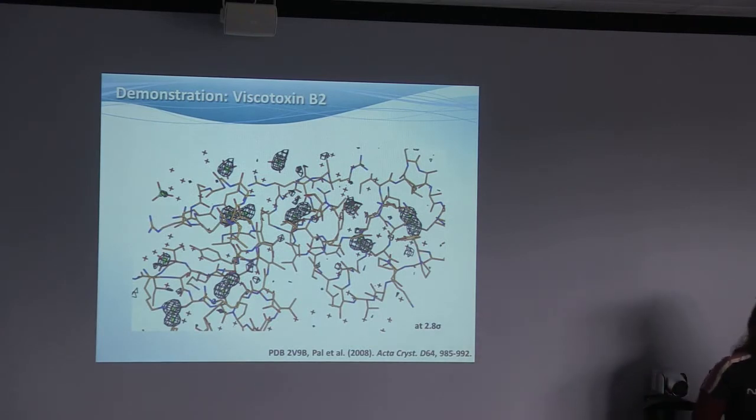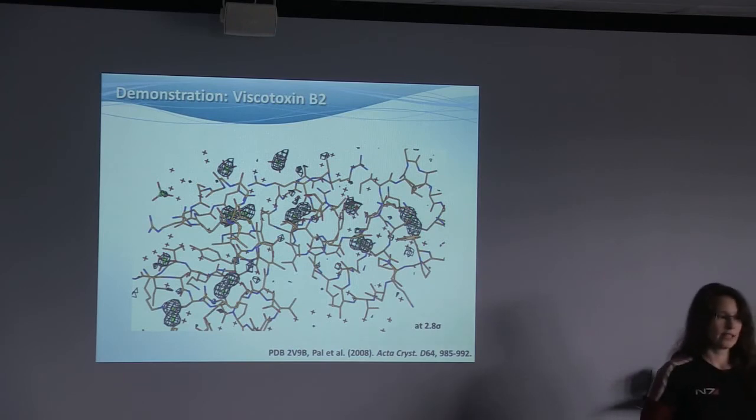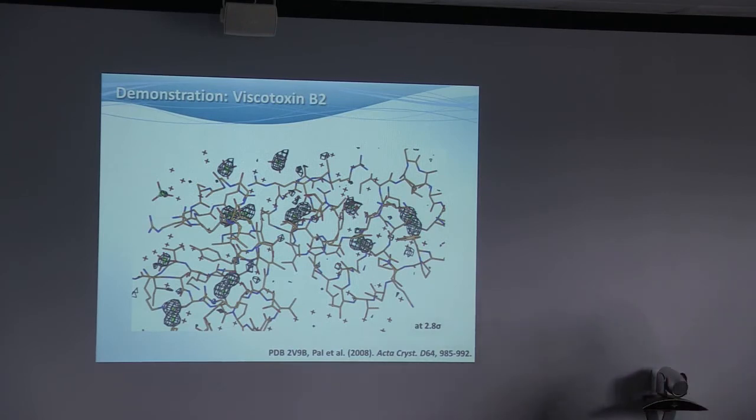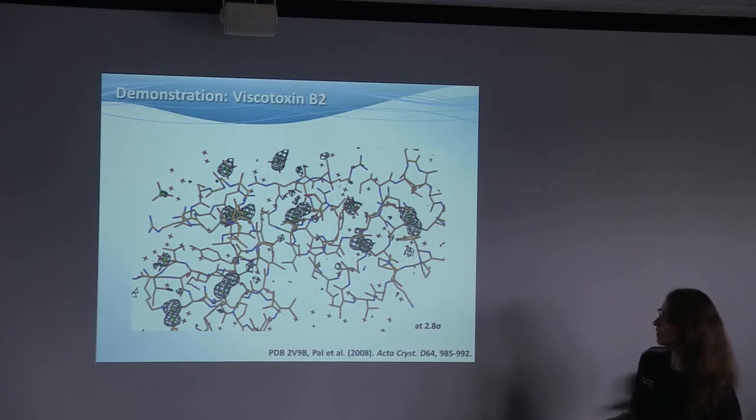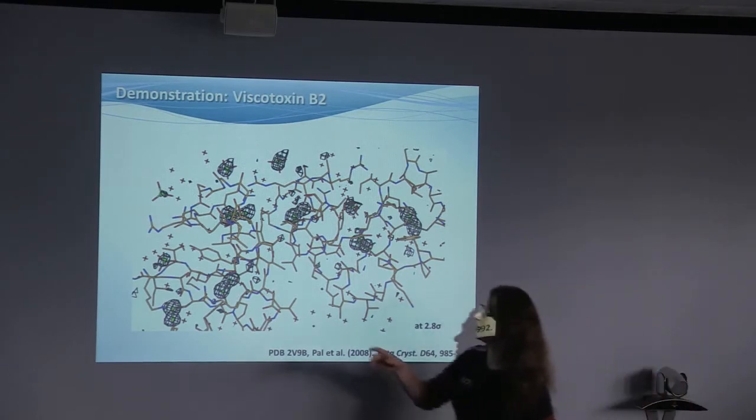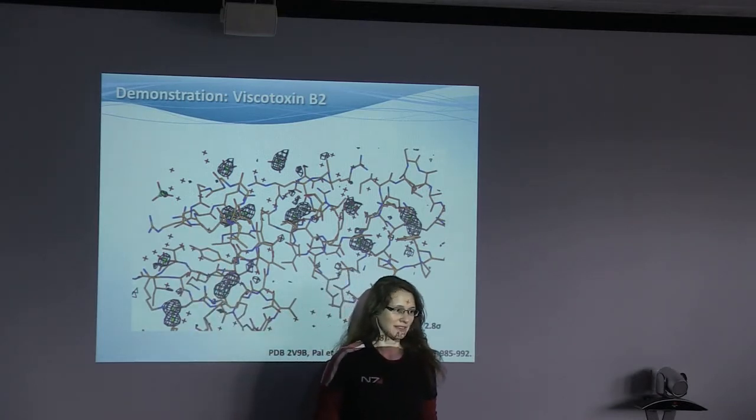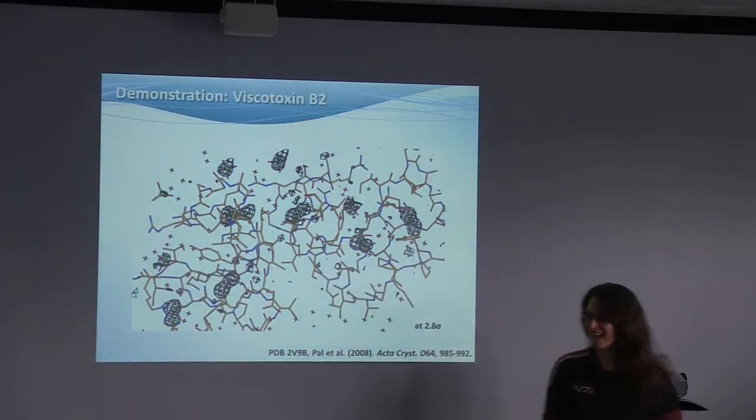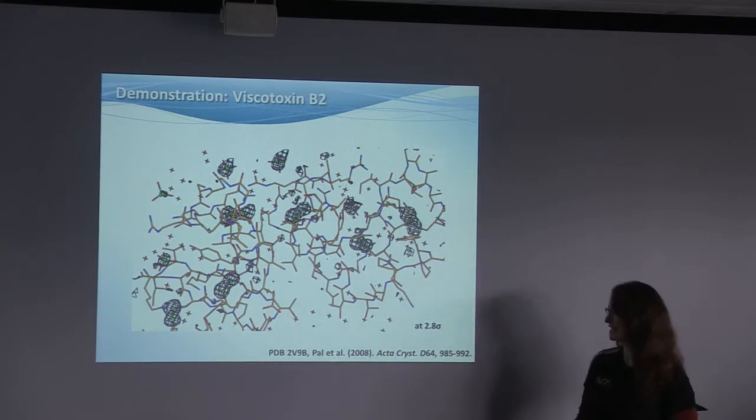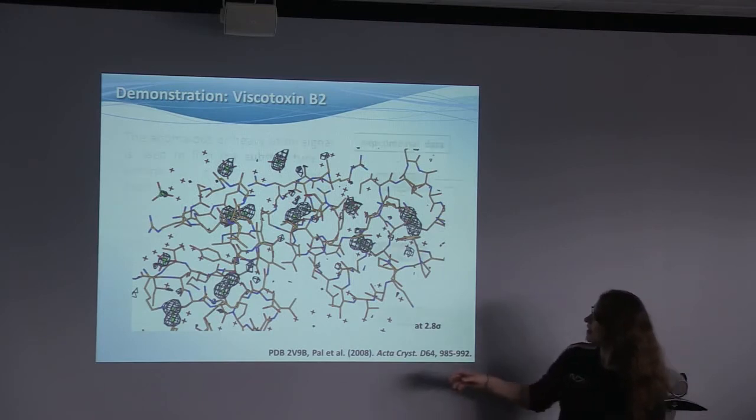Yes, that's what actually happened. There was only a quarter occupancy on that sulfate. There are two more potential explanations. Yes, there could be a high B factor. And the last one could be, this is not actually a sulfate. But it's the deposited PDB and actually it's a sulfate.